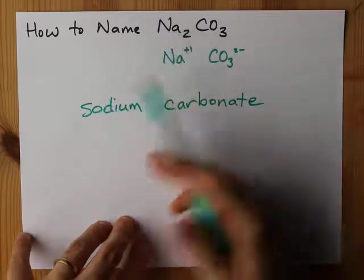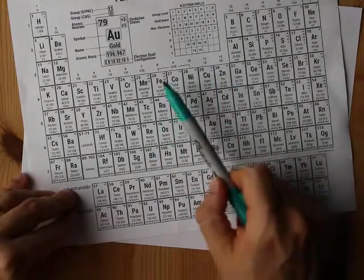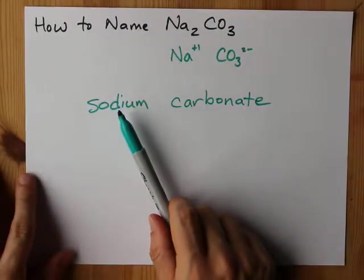If this is a metal that can have more than one valence, like if you're dealing with copper which can be plus one or plus two, or iron which can be plus two or plus three, you'll have to use a Roman numeral here. But sodium doesn't have that issue, so you just say sodium.